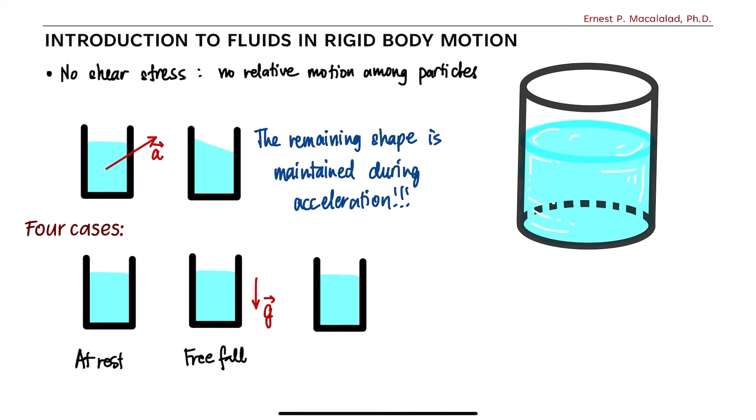The third case that we're going to discuss is how fluids within a rigid body behave when the rigid body undergoes translational acceleration on a straight path. So in this case, there are two accelerations that are present. Of course, the first one is the gravitational acceleration and the other one is the linear acceleration.